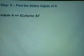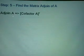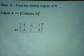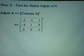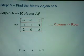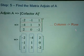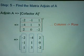Step number five is to convert the cofactor to an adjoint. So in order to find the adjoint of A, we do a transposition on cofactor A. To do a transposition, all the elements in a row are converted into columns — columns to row and row to column. So from here, negative two, negative one, one becomes a column, then row two becomes column two, and row three becomes column three.